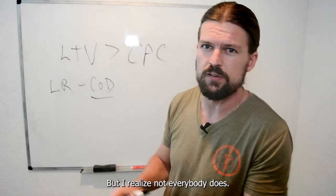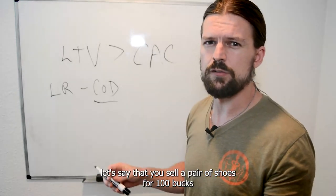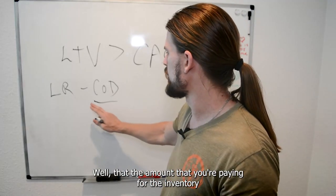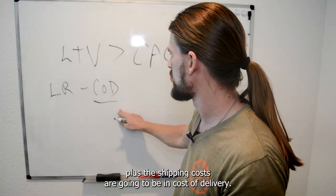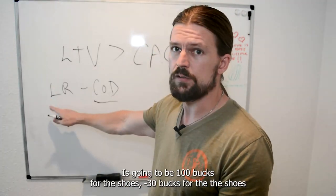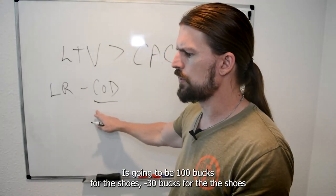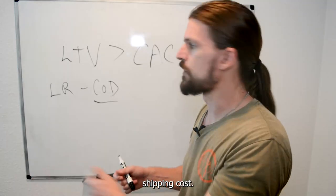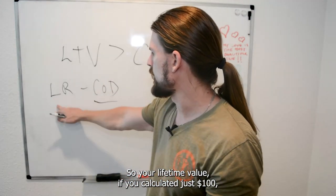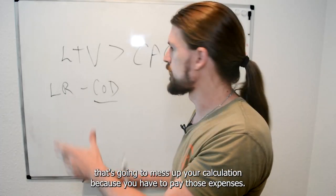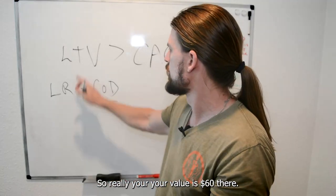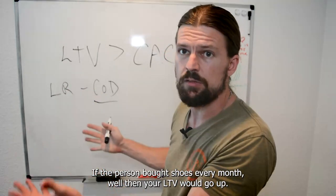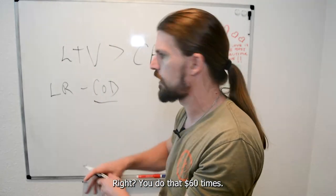Let's say you sell a pair of shoes for $100, you pay your supplier $30, and you pay $10 in shipping. The inventory plus shipping costs go into cost of delivery. So your revenue is $100 for the shoes, minus $30 for the inventory, minus $10 for shipping. If you calculated lifetime value as just $100, that would mess up your calculation. Your real value is $60. Now, if that person bought shoes every month, your LTV would go up — $60 times however many times they bought.